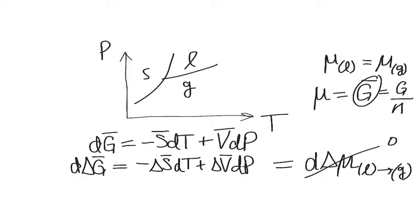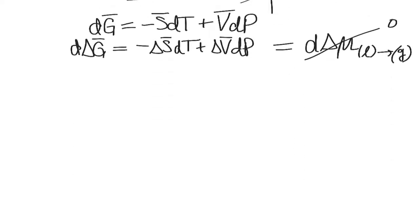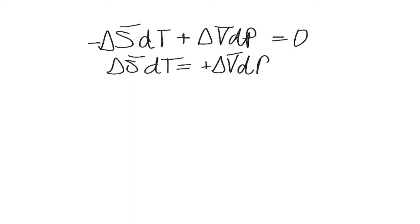This is now what we can do. Negative delta S molar dT plus delta V molar dP is equal to zero as we said. So then delta S molar dT is equal to delta V molar dP.